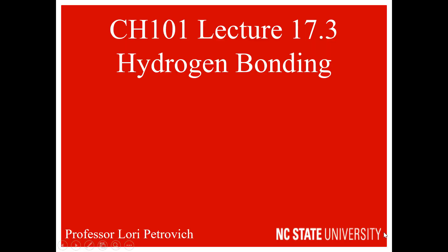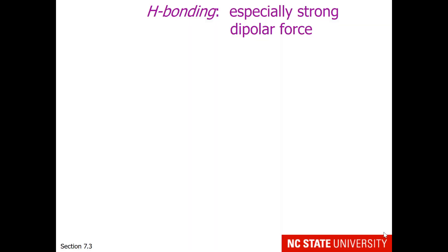The last intermolecular force to be discussed is hydrogen bonding. Hydrogen bonding is an especially strong dipolar force. Here is an example molecule. R stands for rest of the molecule — it's not an element — and is usually a carbon chain with hydrogens on it. The important part is the oxygen-hydrogen bond. Oxygen is more electronegative than hydrogen, so oxygen will have a partial negative charge and hydrogen will have a partial positive charge.